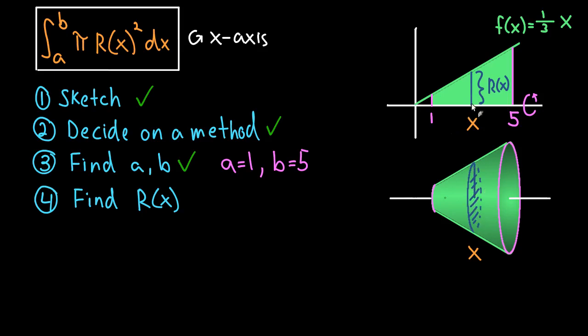And the distance from the axis of rotation to the edge of the circle, that is the radius. Okay, and this r(x) clearly depends on x, because if we had picked this x value, the radius would be smaller. If we pick something out here, the radius would be larger. So that radius function really depends on which x value we pick.